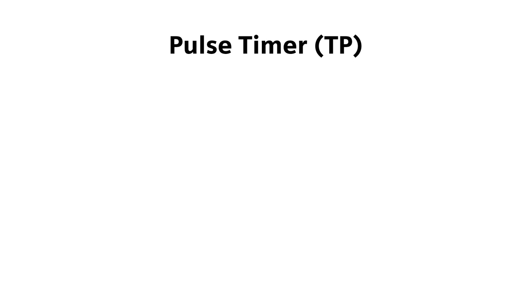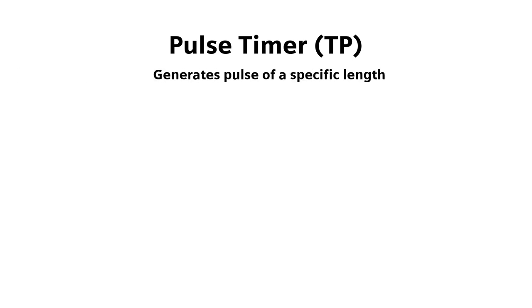The last of the three official timers from the PLC Open Standard is the Pulse timer, also known as TP. This timer is used for generating pulses of a specific length.